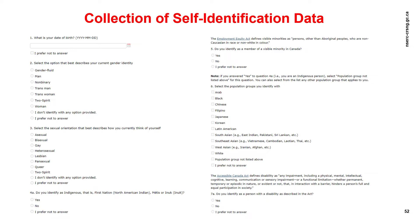The user profile in the Research Portal has a series of questions asking your age and how you self-identify with respect to gender, Indigenous identity, status as a person with a disability, and whether you are a member of a visible minority in Canada. Applicants have the option of selecting 'I prefer not to answer' to all questions. Applicants will be asked these self-identification questions each time they submit an application, and the user profile will be pre-populated with your last responses. You can change your information with each submission.